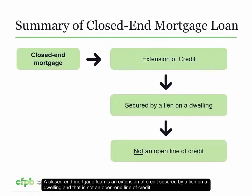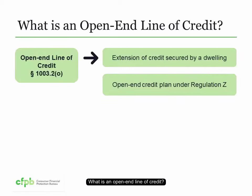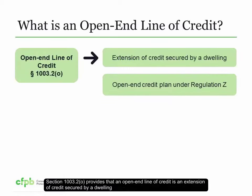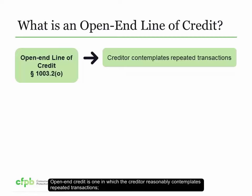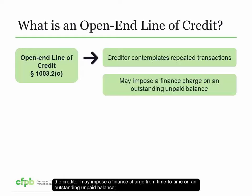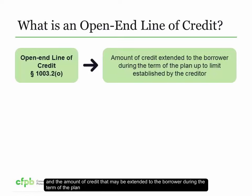Let's recap. A closed-end mortgage loan is an extension of credit secured by a lien on a dwelling and that is not an open-end line of credit. An open-end line of credit is an extension of credit secured by a dwelling and that is an open-end credit plan under Regulation Z, Section 1026.2(A)(20), but without regard to whether the credit is consumer credit, extended by a creditor, or extended to a consumer. Open-end credit is one in which the creditor reasonably contemplates repeated transactions, may impose a finance charge from time to time on an outstanding unpaid balance, and the amount of credit that may be extended is generally made available to the extent that any outstanding balance is repaid.